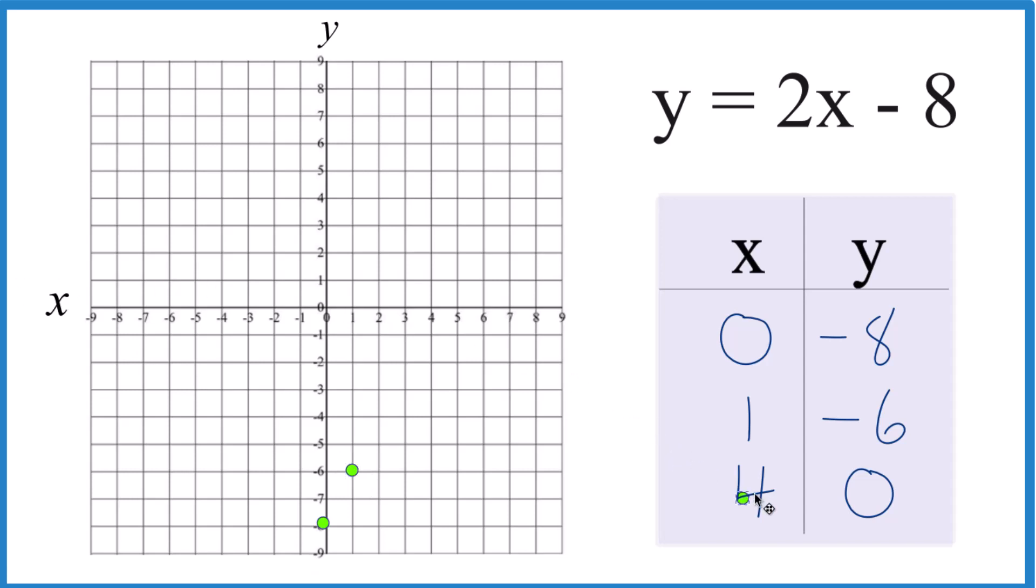And you can get away with doing two points. Probably better to do three, though. x is 4, and y is 0. And there you have it. That's our line. Let's put a line through there.